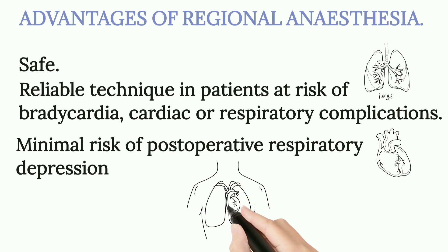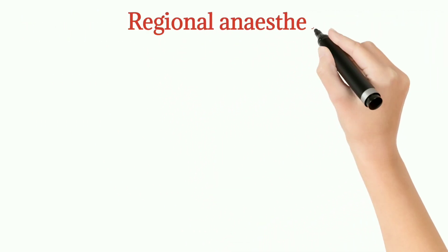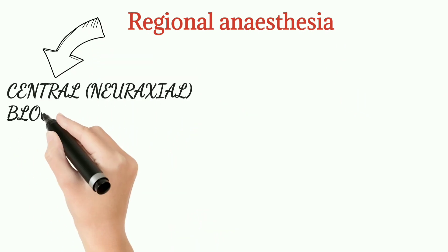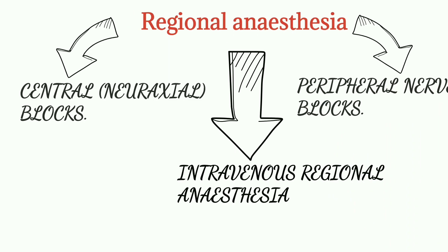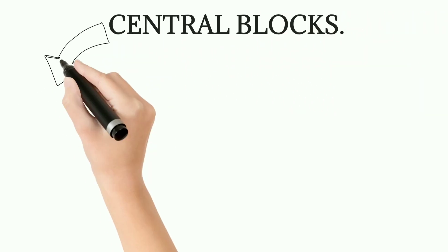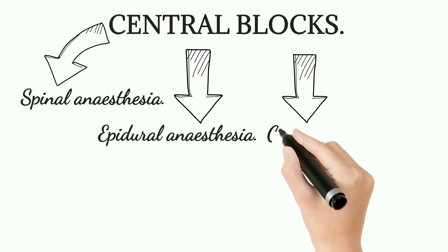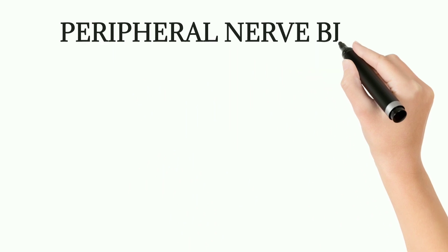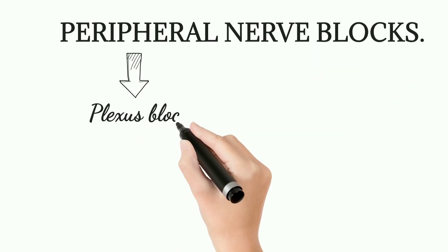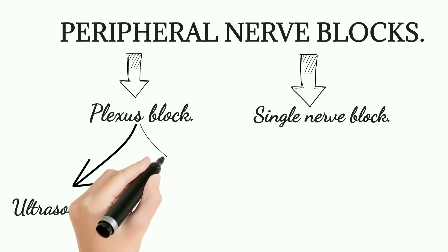Types of regional anesthesia: Central blocks include spinal anesthesia, epidural anesthesia, combined spinal and epidural anesthesia, and caudal block. Peripheral nerve blocks include plexus block, single nerve block, ultrasound-guided nerve block, and nerve stimulation-guided block. Intravenous regional anesthesia is also a type.